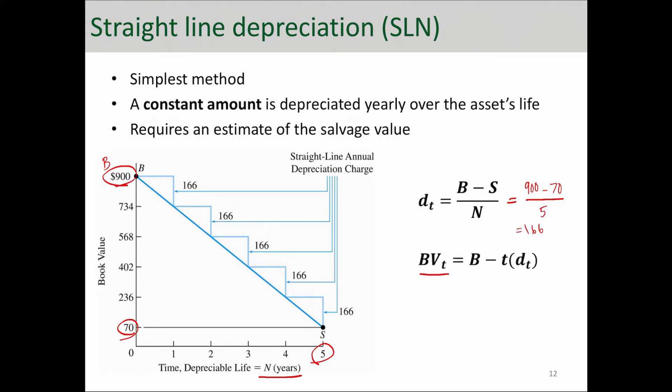If you were to calculate the book value at each year, let's say book value at year four, you need to subtract the total amount of deductions or depreciation for the past four years from the cost basis. So cost basis of $900 minus four times the depreciation deduction amount which we just calculated, that is $166. You can calculate that and that is $236, exactly the amount that you see here—the book value at year four.